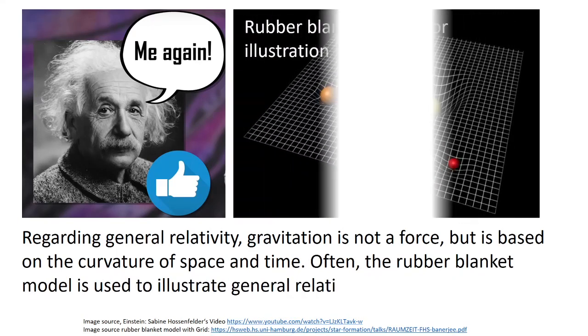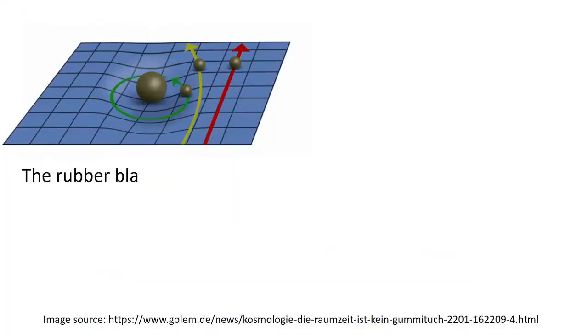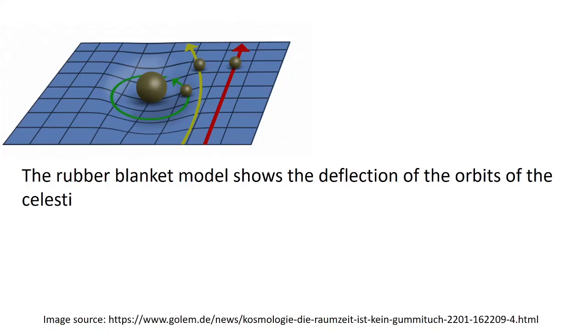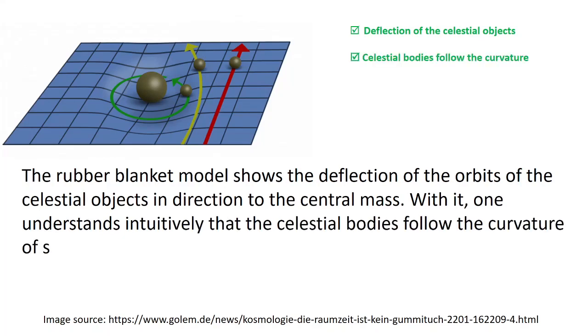Often the rubber blanket model is used to illustrate general relativity. The rubber blanket model shows the deflection of the orbits of the celestial objects in direction to the central mass. With it, one understands intuitively that the celestial bodies follow the curvature of space and that the reason for this curvature is a bigger mass.